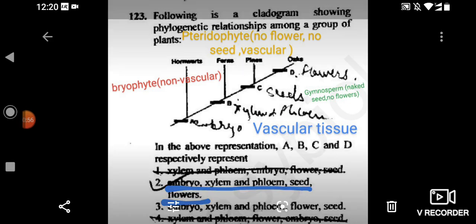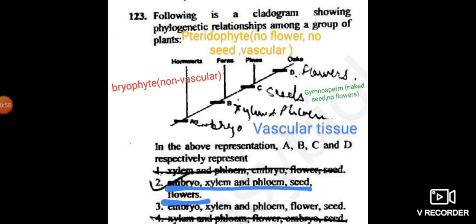Let's consider first A, hornwort is given. Hornwort, we know that it is a kind of bryophyte and the division is Anthocerotophyta. It is a non-vascular plant and it doesn't contain xylem and phloem. The option which is suitable is the embryo, that is the sporophytic phase.